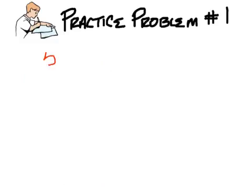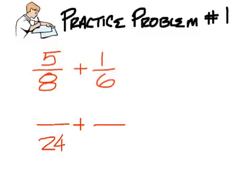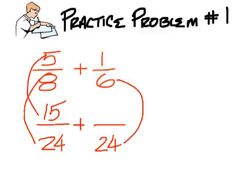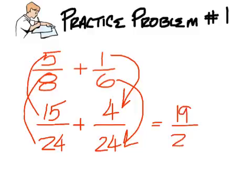Practice one. Five over eight plus one over six. What is the lowest number that both eight and six go into? Twenty-four. So I had to multiply eight by three. So five times three is fifteen. Six had to be multiplied by four. One times four is four. Twenty-four. Fifteen plus four is nineteen. Nineteen over twenty-four is the answer.